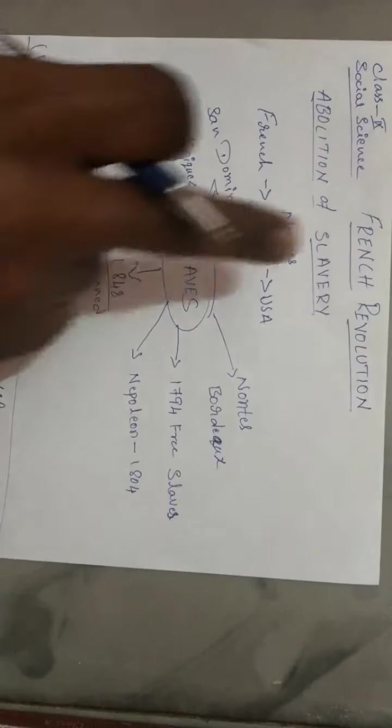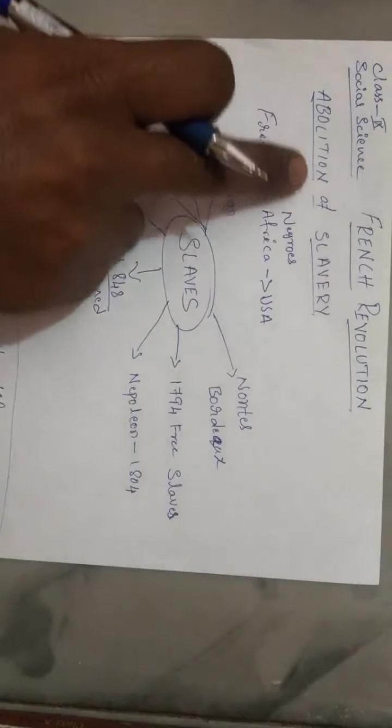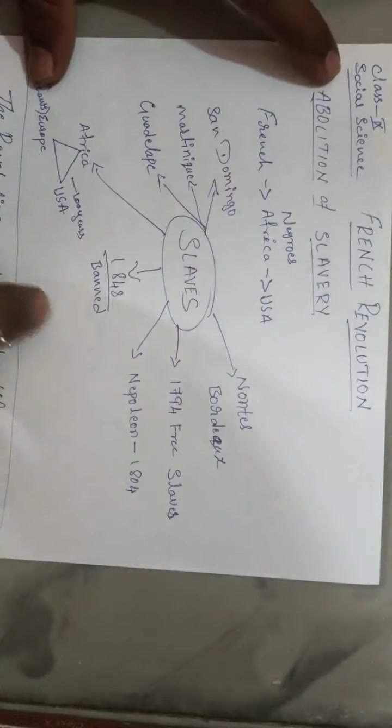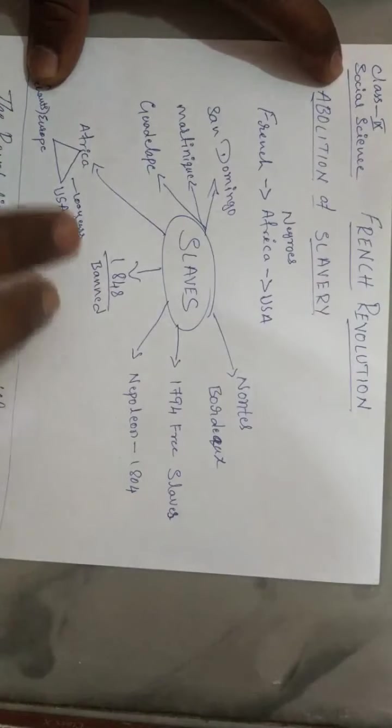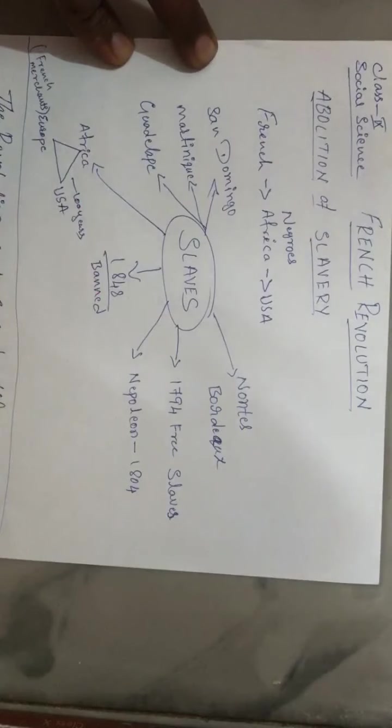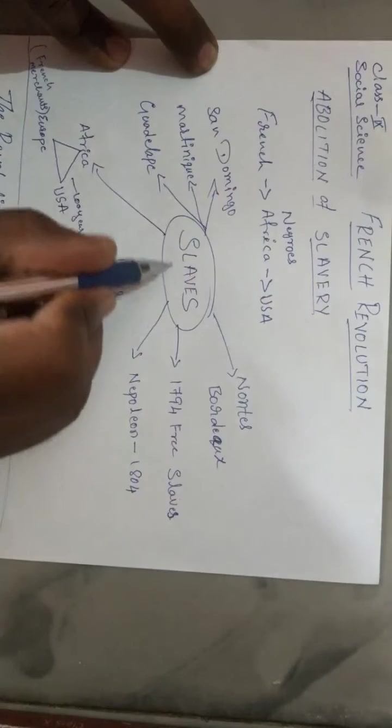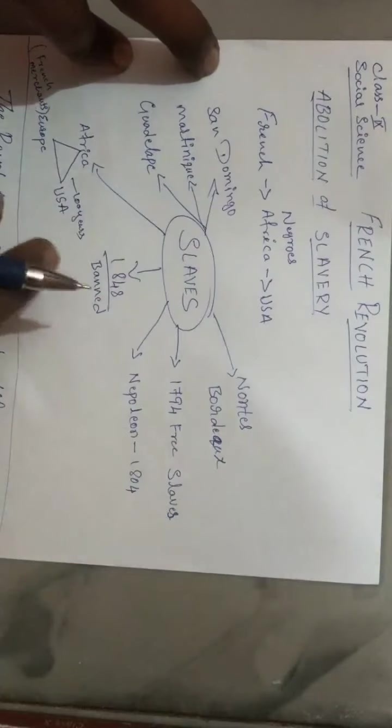We were studying about the French Revolution, and today's topic is abolition of slavery. You know what is slavery? Slavery means the ones who work under rich people or landlords for less wages or without wages. That slavery had to be abolished during that time in Europe. Let us study about slaves.